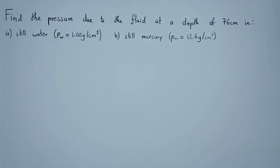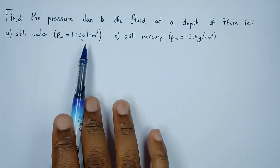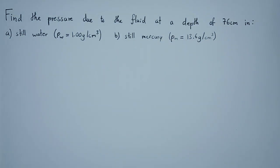Hi guys, so we have this question on densities. Let's see how we can answer it. The question says find the pressure due to the fluid at a depth of 76 centimeters in still water as well as in still mercury.